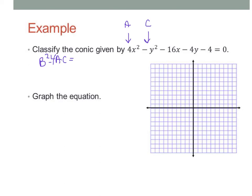So, b squared, 0 minus 4 times 4 times negative 1. So, that's going to give us a positive 16. And looking over the list we wrote, that is greater than 0. So, this is going to be a hyperbola.